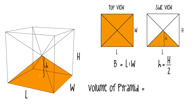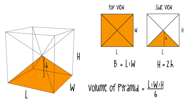So in order to find the volume of the pyramid, we take the volume of the cube and divide it by 6, since the 6 pyramids are equal to the whole cube. What we want to do now is take a look at the second equation and solve for the height of the cube, and this is going to be 2 times the height of the pyramid. Substituting this into the formula, 2 over 6 simplifies to 1 over 3.